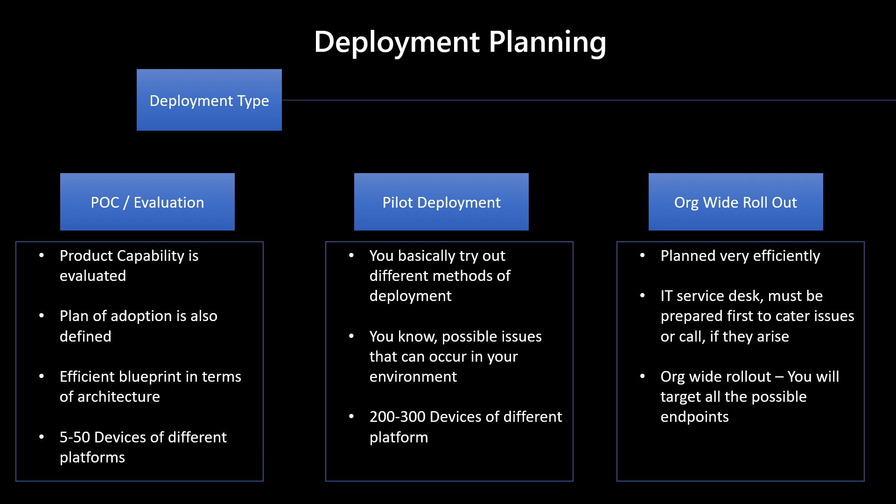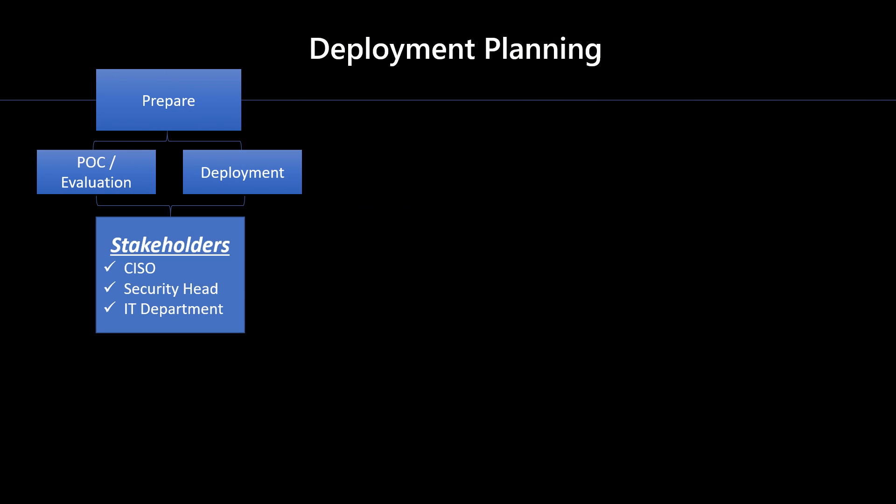When planning your deployment, consider what exactly you are going to do — POC, pilot, or org-wide rollout. Irrespective of the deployment type, the respective stakeholders will be involved. It's a security project, so CISO, security head, and IT department should all be involved, because there is a certain amount of contribution required from each team to have a successful deployment.